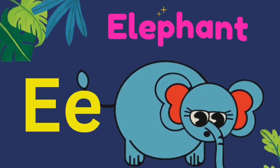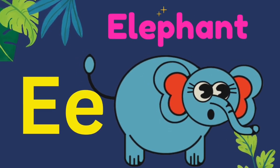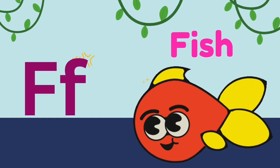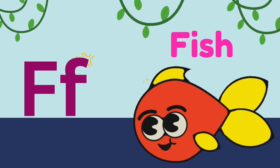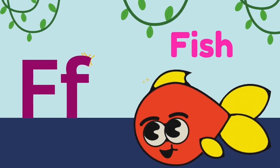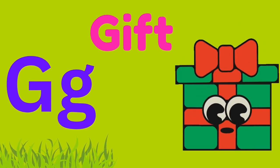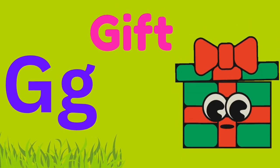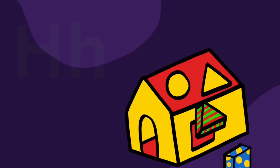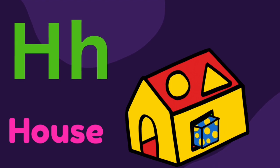E is for Elephant. F is for Fish. G is for Gift. H is for House.